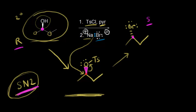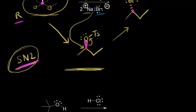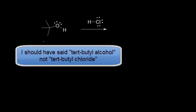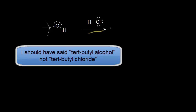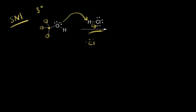Now let's look at an SN1 mechanism using a tertiary alcohol. We have tert-butanol reacting with concentrated hydrochloric acid. HCl functions as the acid and the alcohol functions as a base — it gets protonated, and we form the chloride anion with a negative one formal charge. So the oxygen is protonated, getting a plus one formal charge, and we now have an excellent leaving group: water.